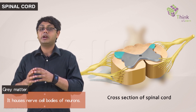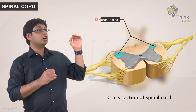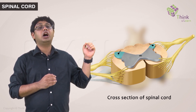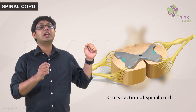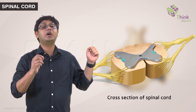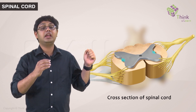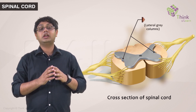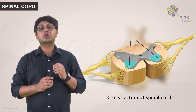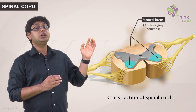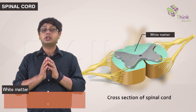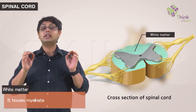The two wings of the butterfly directed backwards are called the dorsal horns or the posterior grey columns. Looking at the other two wings, you will see that they have a small lateral extension as well as one facing forward. The lateral extensions are called the lateral horns or the lateral grey columns, and those facing forward are called the ventral horns or the anterior grey columns. This grey matter is surrounded by white matter, which is the myelinated axons of the nerve cells.